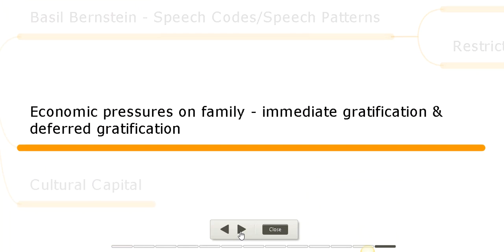Next we have immediate gratification and deferred gratification. Working class parents are less ambitious for their children and take less interest in their children's education. As a result, children feel less motivated to work at school. Due to economic pressure, certain working class children leave school at the earliest opportunity in order to get low-paid jobs, and this is known as immediate gratification.